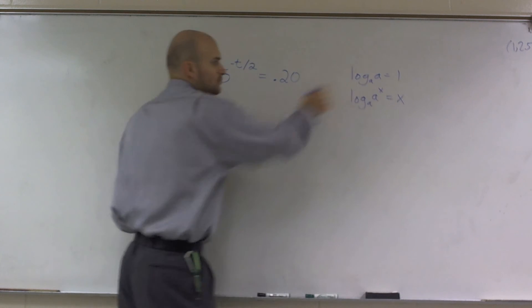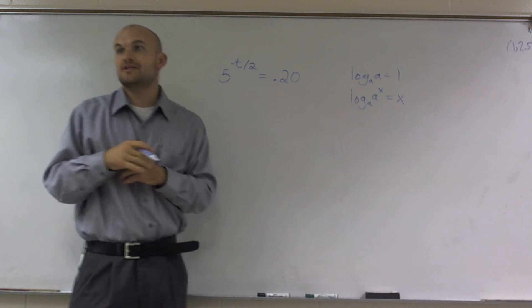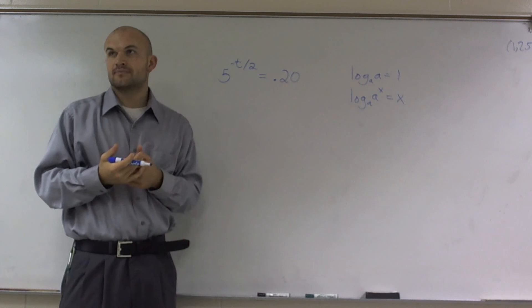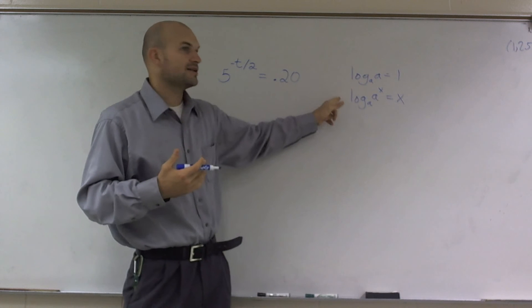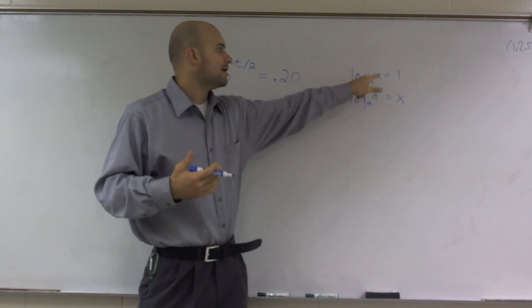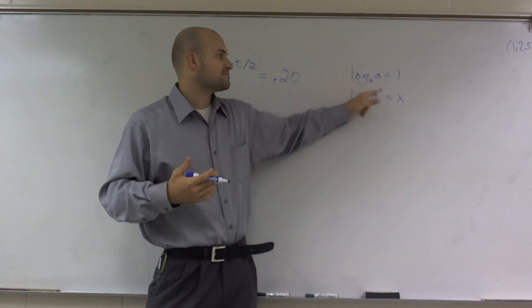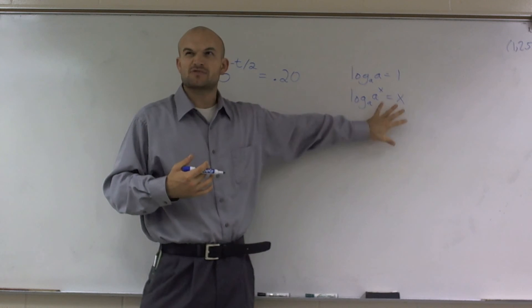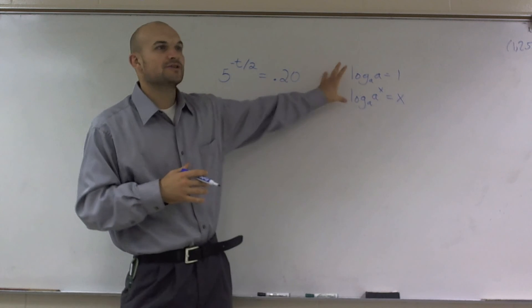Since that whole thing equals one, when it's raised to an exponent, it's just going to equal x. And another reason why is remember you could always bring the x in front, so it would be x times that. Well, that equals one, so x times one is actually just going to equal x. So that's why that works. So you guys need to make sure you understand that.